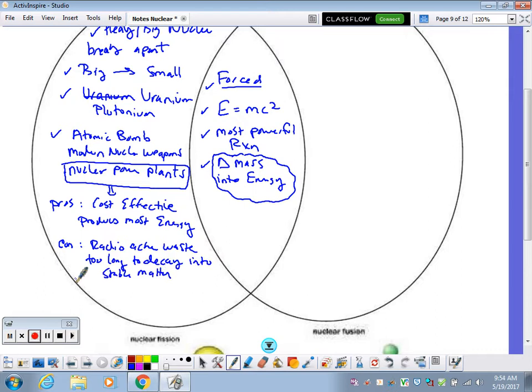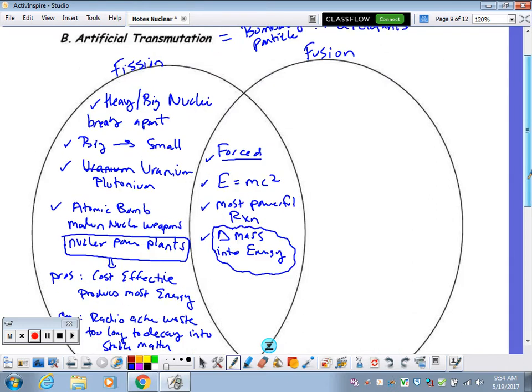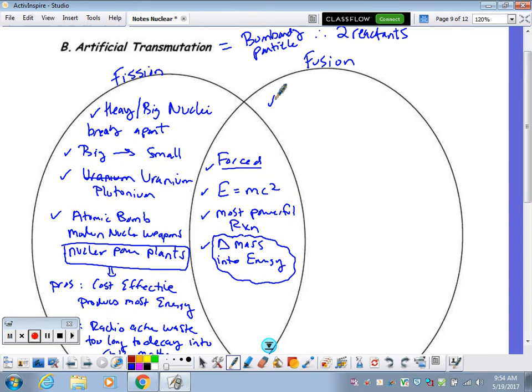In the United States, they started storing some of the radioactive waste in Yucca Mountain to keep it out of regular landfill sites. On the other hand, fusion, this is when you start with small nuclei. And, these small nuclei, they unite.